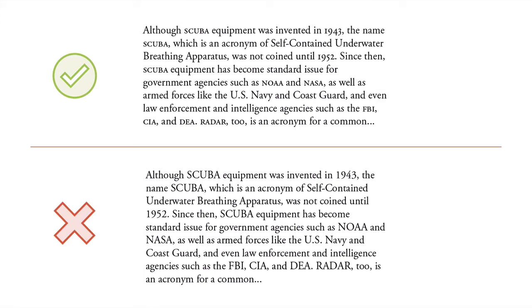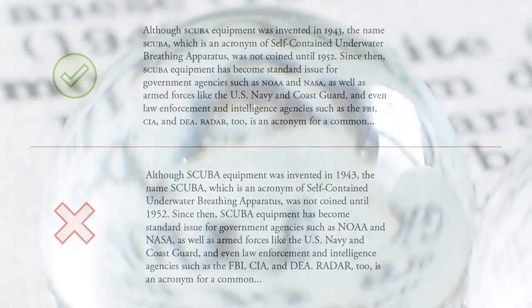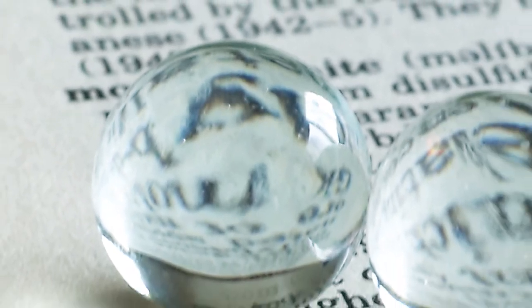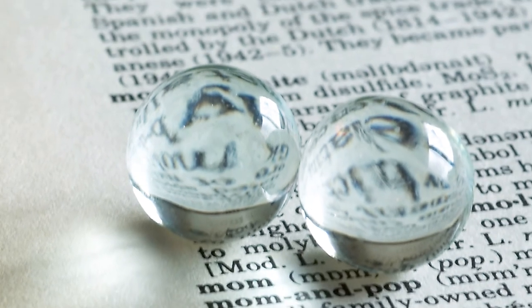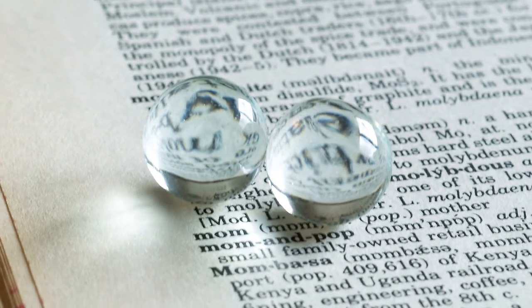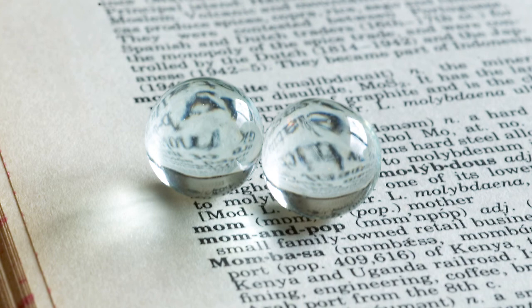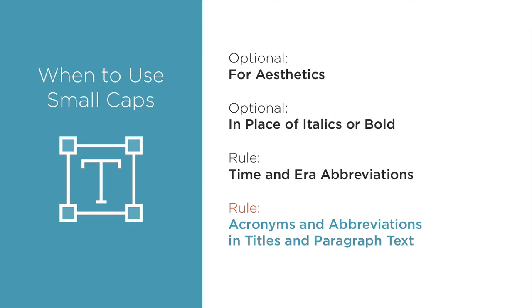They don't need to be distracting elements that draw the eye from elsewhere in the text. This is the rule that always gets the most pushback from people because it's the one that's most opposed to what they see every day. Just remember what your mother told you — two wrongs don't make a right. Just because you've seen it the wrong way a hundred or more times doesn't make it right. You don't have to take my word for it if you don't want to — do a web search for small caps and acronym. If you want to produce professional typography with the best legibility and readability, use genuine small caps for acronyms and common abbreviations in titles and paragraphs of text.